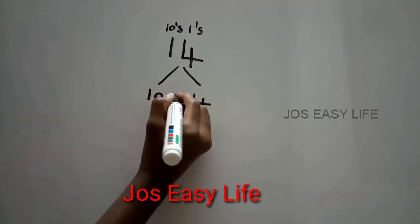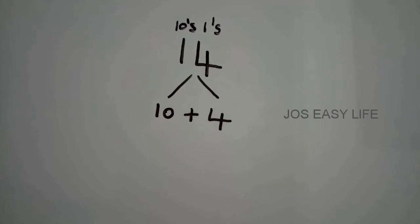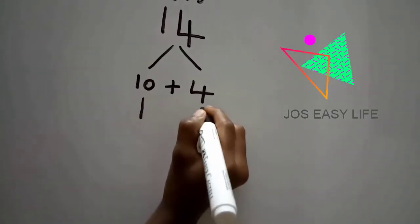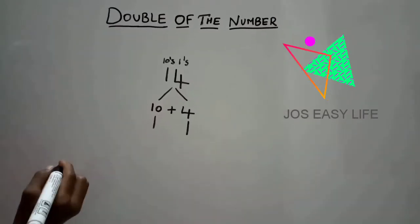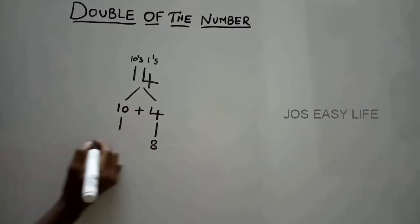Now, we have to put an addition symbol over here. This value is equal to 14. Now, we have to double these numbers. 4 plus 4, we get 8. 10 plus 10, we get 20.